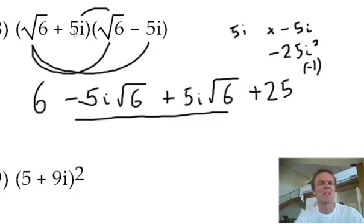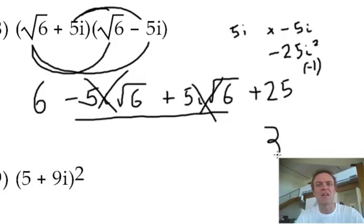Some of you might be able to see some shortcuts to this. Like I say, positive times a negative when I'm doing the last will be negative, but it will change to positive because there's an i squared there, a negative 1. Gone, gone. What's 6 and 25? It's 31. And that's the answer.